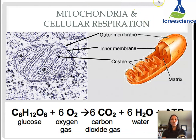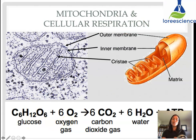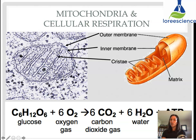Looking at the mitochondria and cellular respiration: they take glucose (C₆H₁₂O₆) and combine it with the oxygen we breathe in to create carbon dioxide — a waste product we get rid of — and water, a waste product we breathe out as well. But ATP is the energy currency that our cells can then use to function and carry out other processes.